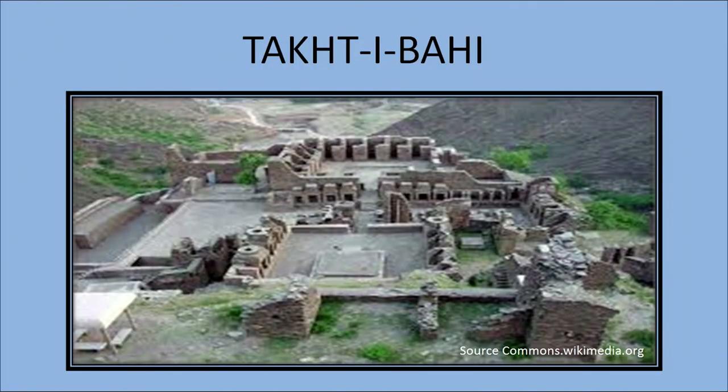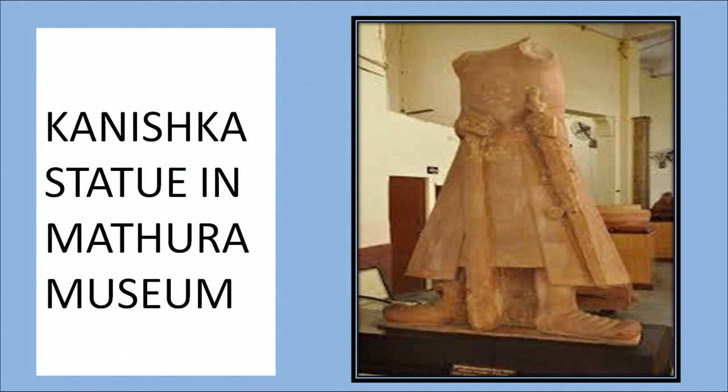Gondophernes was an important Parthian ruler. The Takht-e-Bahi inscription recovered from Mardan near Peshawar mentions him. The Kushanas originally belonged to the Yuchi tribe of China. They created a big empire in Pakistan after defeating the Shakas and Pahlavas. The first important Kushana king was Kujula Kadphises, succeeded by his son Vema Kadphises. The next ruler was Kanishka, the most famous of the Kushanas. He probably ascended the throne in 78 AD. Kanishka's empire extended from Central Asia to North India and included Varanasi, Kaushambi, and Shravasti in Uttar Pradesh.